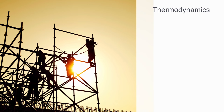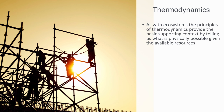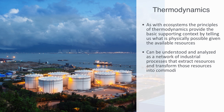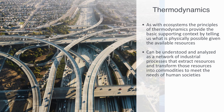As with systems ecology, thermodynamics is the theoretical backbone to industrial ecology. As with ecosystems, the principles of thermodynamics provide the basic supporting context by telling us what is physically possible given the available resources. Industrial systems — and more precisely the global industrial economy as a whole — can be understood and analyzed as a network of industrial processes that extract resources from the ecosystem and transform these resources into commodities to meet the needs of human societies. The industrial economy is a network through which energy and resources are processed — a global supply network composed of many different nodes as resources are extracted, refined, and synthesized during various production processes.